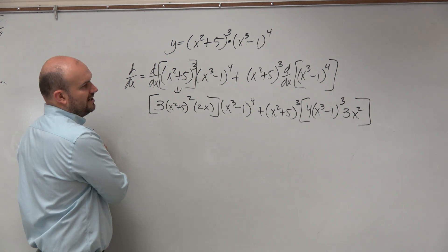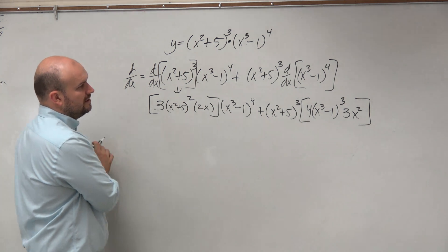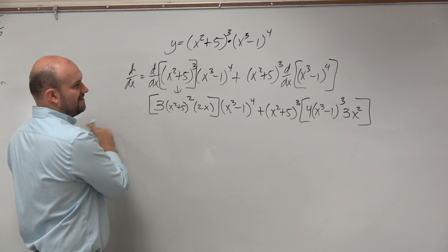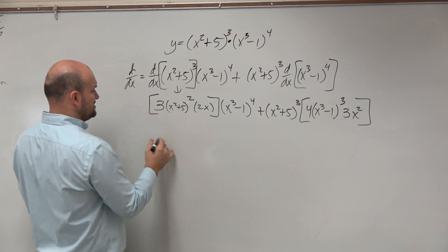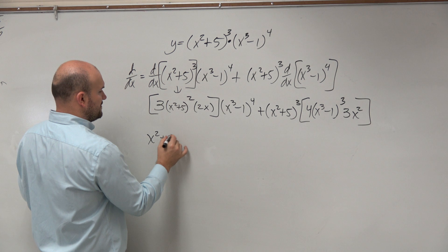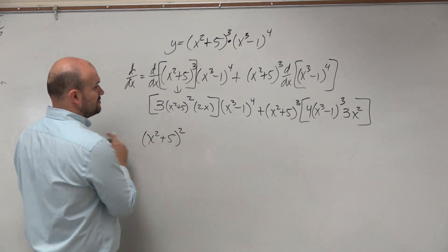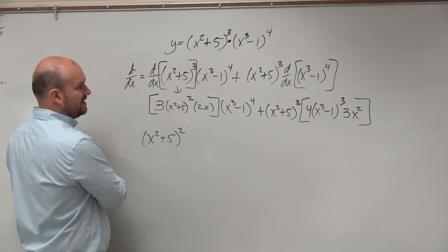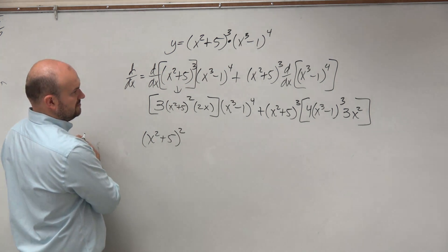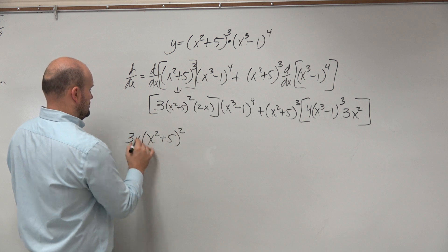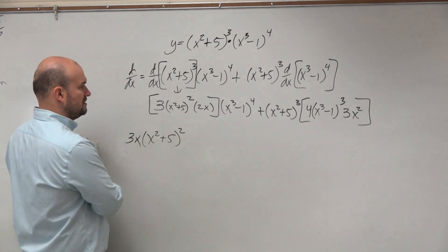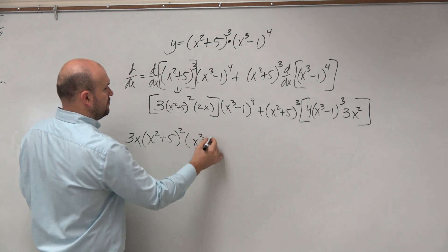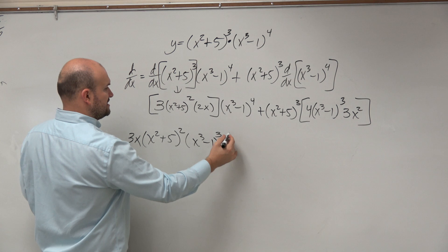So if you wanted to simplify this or if you were asked to simplify this, there's a couple things that we could take out. So let's see what they have. Let's see what these two have in common. They have x squared plus 5 squared that you could factor out. And we have a 3 and an x that we could take out. And then we have also x cubed minus 1 to the third power we could take out.